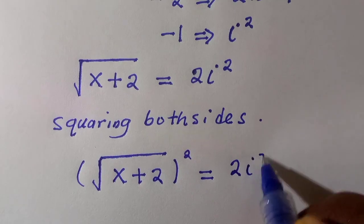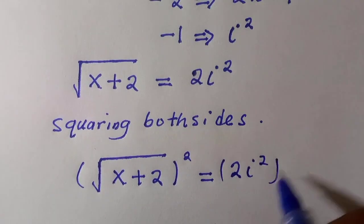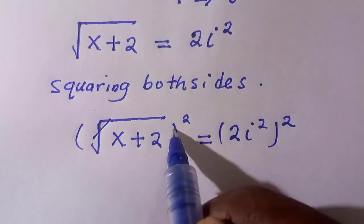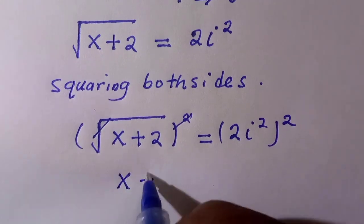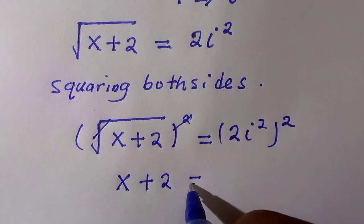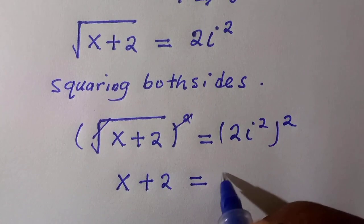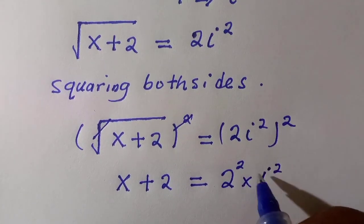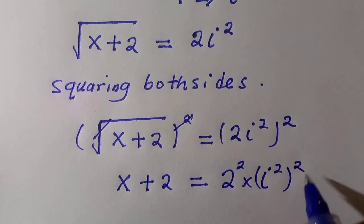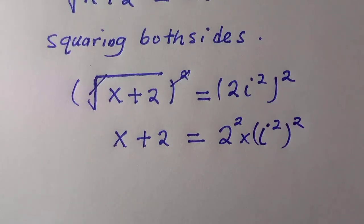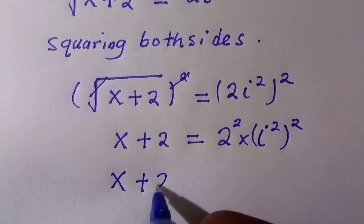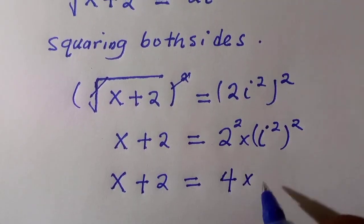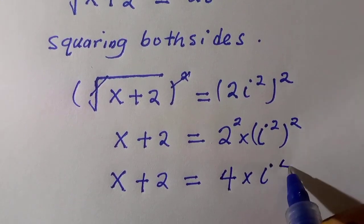By doing that, we have the square root of x plus 2 all squared equals 2i squared all raised to the power of 2. This and this cancel, we are left with x plus 2 equals 2 squared times i squared all squared.